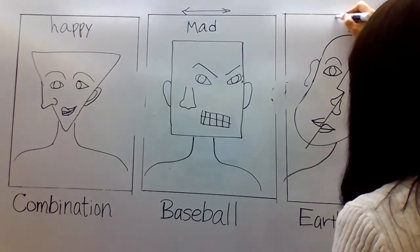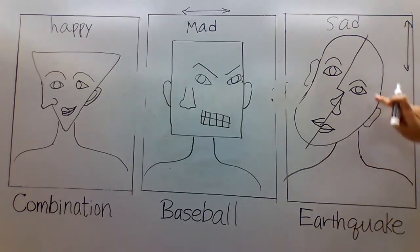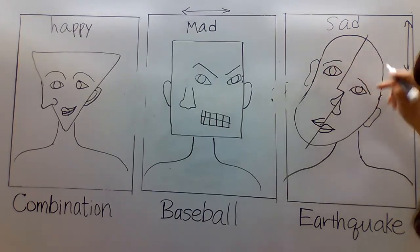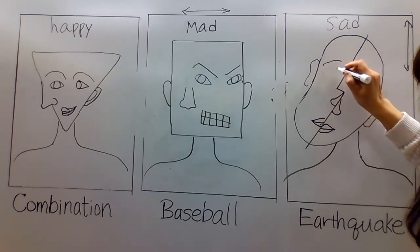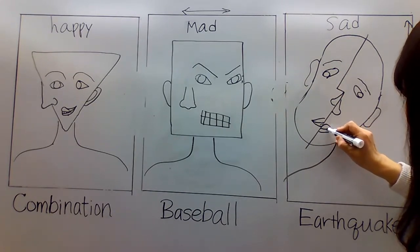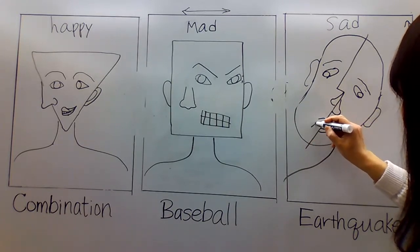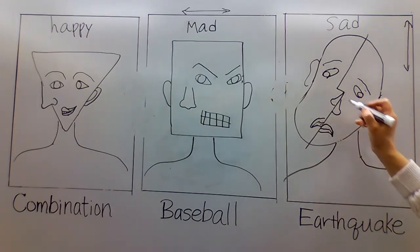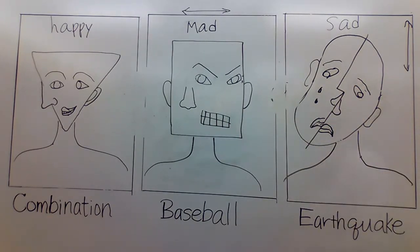The last one — let's turn him or her into sad. When you're sad, your eyebrows will go down, and your eyes will go down too. I'm so sad. And you can even add some teardrops if you want to.